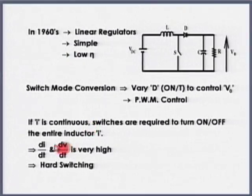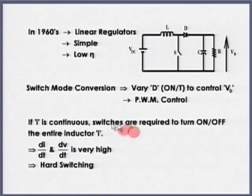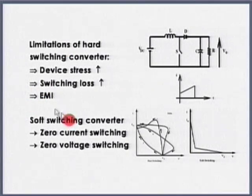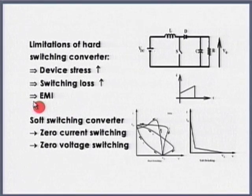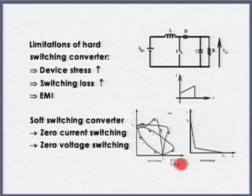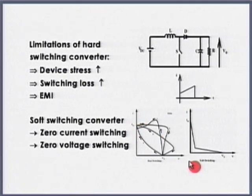In hard switching, di/dt and dv/dt are very high. The limitations are: device stress increases, switching losses increase, and electromagnetic interference increases. Also, see the locus of voltage and current.